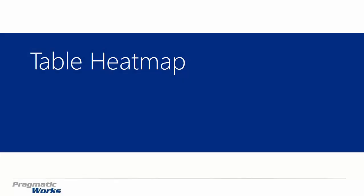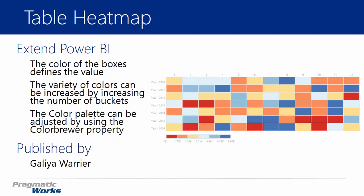Hi and welcome back to the Power BI Custom Visuals course. In this module we're going to be looking at the Table Heatmap. The Table Heatmap is an interesting visual — it does allow you to take what looks like a table, almost like a matrix or a pivot table, and represent colors instead of values in the middle, where those colors are representative of the values in your data set.